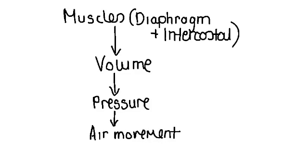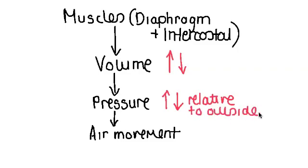Whether the muscles relax or contract will either increase or decrease the volume in the lungs, increase or decrease the pressure relative to the outside atmosphere, and this will result in air moving into or out of the lungs.